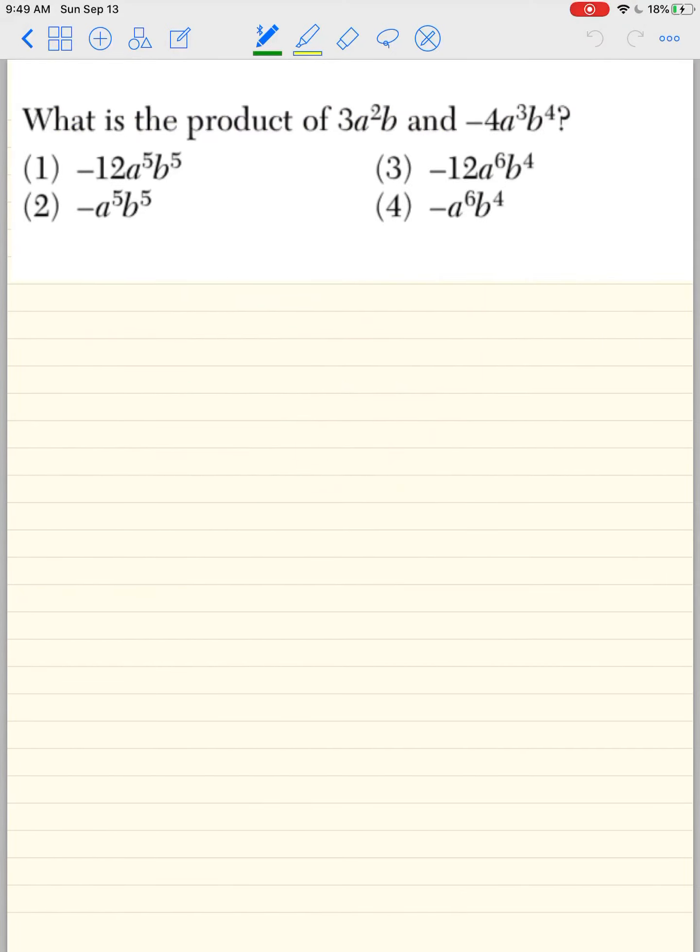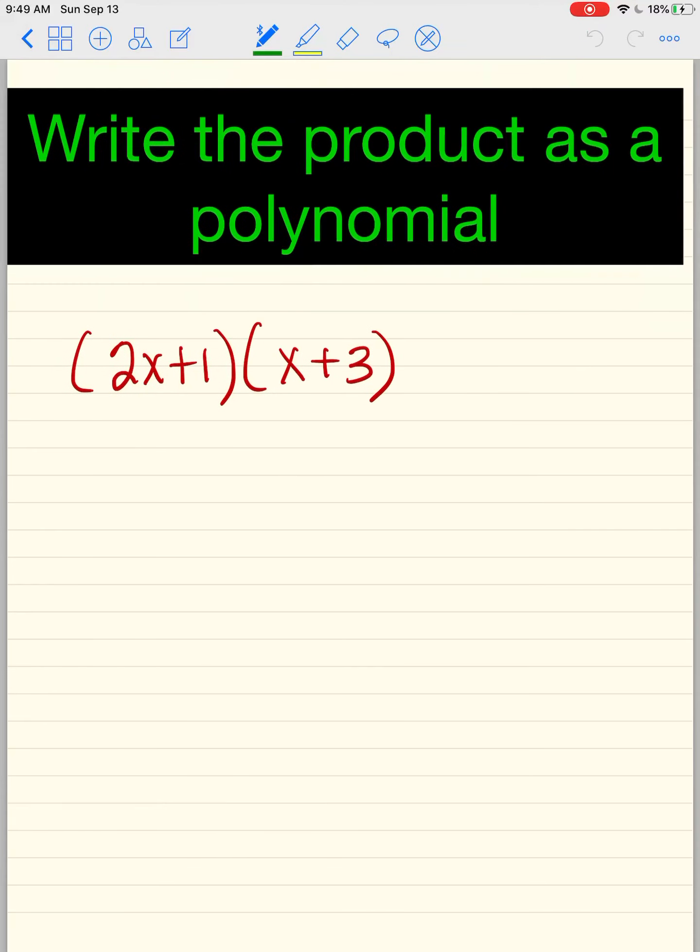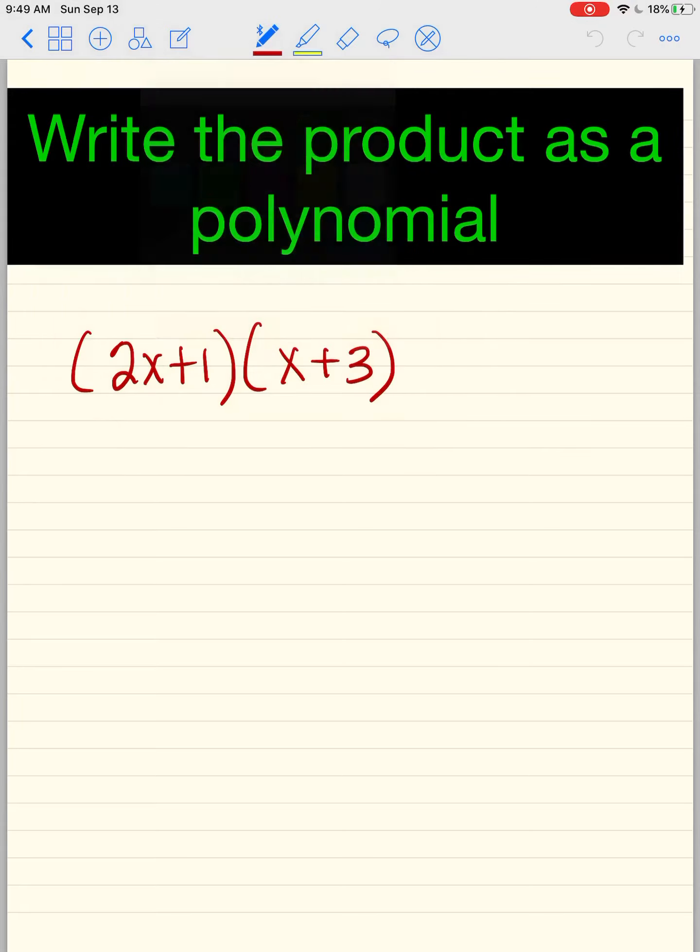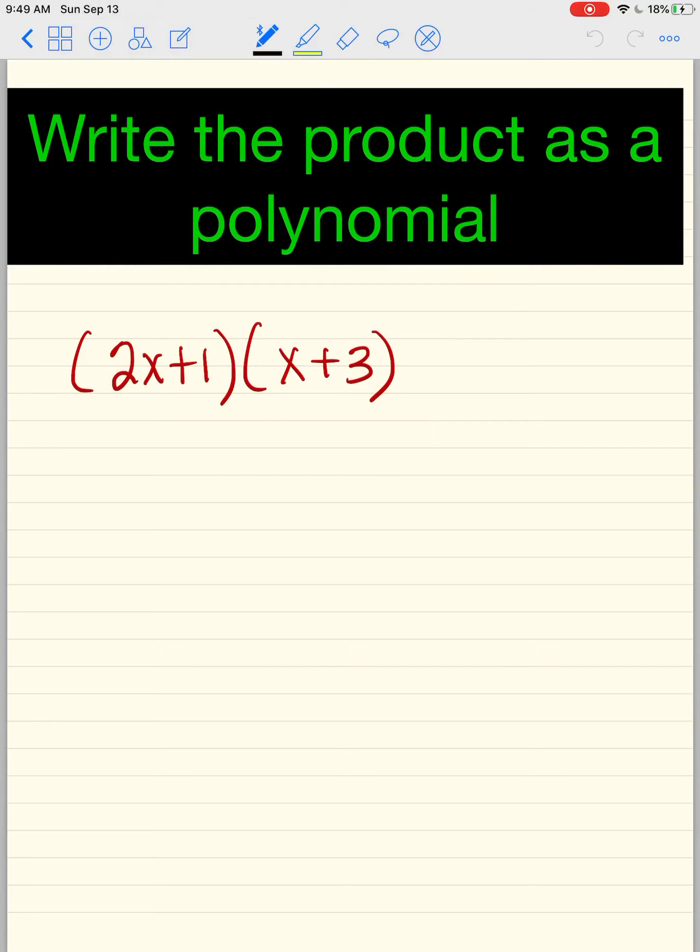What is the product of 3a²b and -4a³b⁴? Oops, I did this problem already. Let's skip over it. Okay, this one, write the product as a polynomial. You guys can pause it if you want, or you can just stay with me. And let me show you what to do here. Let's pick a different color.